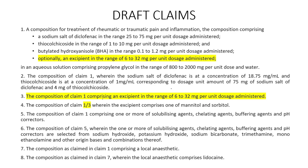Claim 3 is a dependent claim for defining the excipient. I have made a further dependent claim 4 which further defines what the excipient could be — it says the excipient could be one of mannitol and sorbitol. Here you are using 'wherein' to further define the excipient.